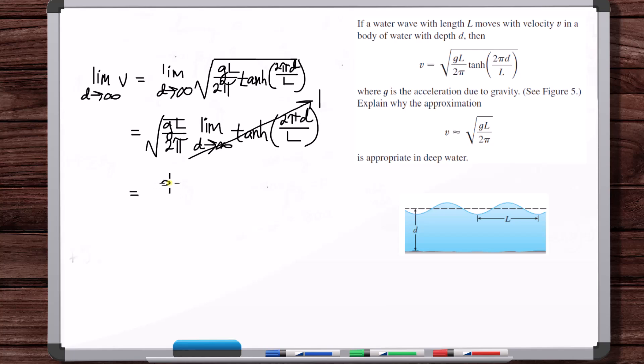And so we're left with, and there you go, square root of GL over 2π. That's this here.